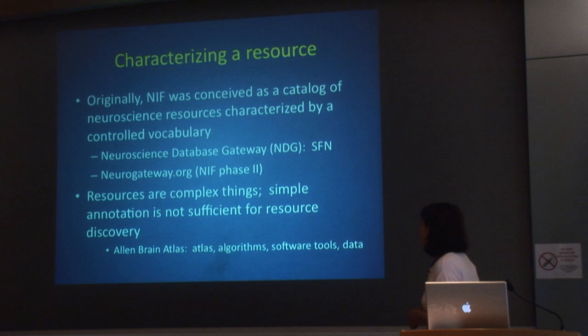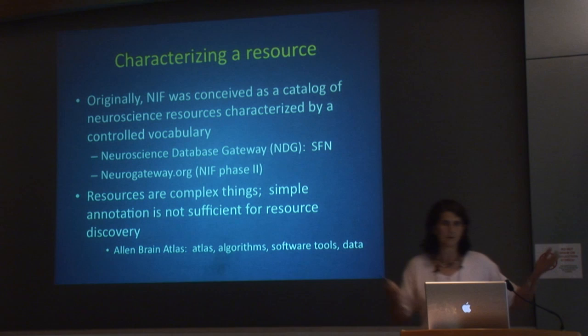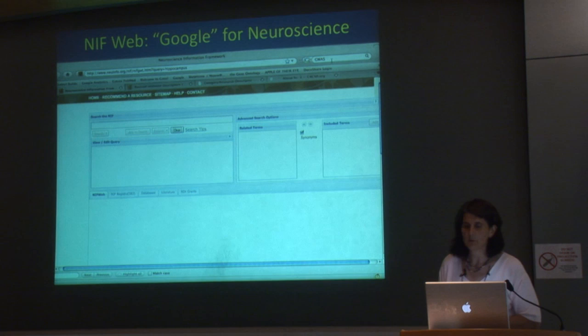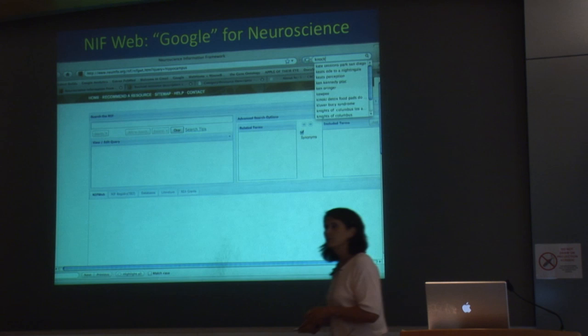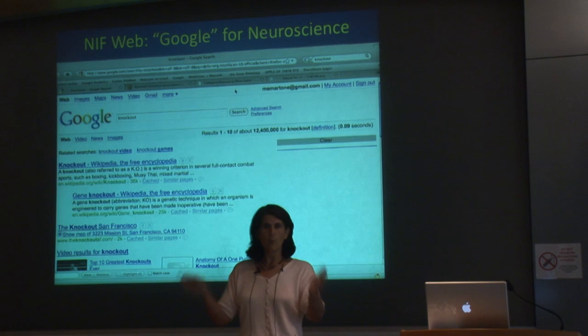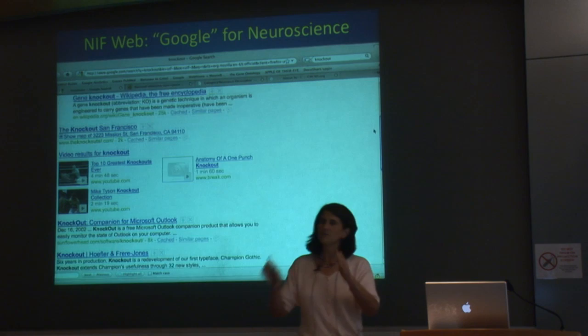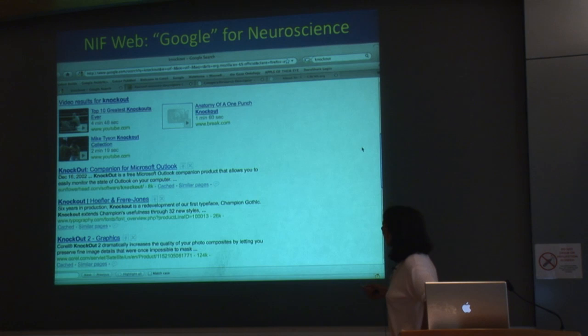We've also done a lot of work in trying to define what a resource is. If you look at something like the Allen Brain Atlas—a very big, sophisticated collection of data—it's an atlas, algorithms, a software tool, and data. What do you call it? One of the first things we did to try to solve this problem was create what we call NIF Web. NIF Web essentially uses the neuroscience registry: those sites already identified as neuroscience-relevant are used to build a web index using open source web tools, including sites those resources link to.